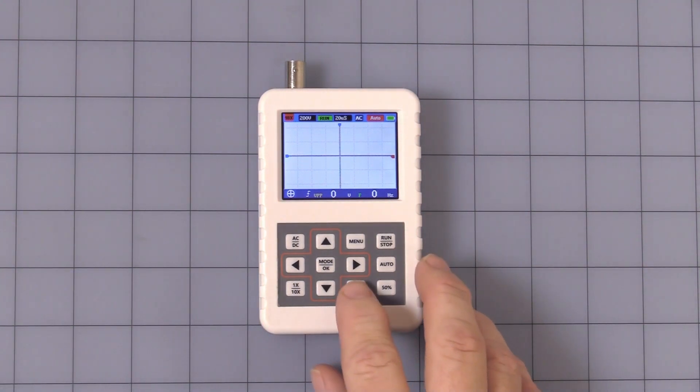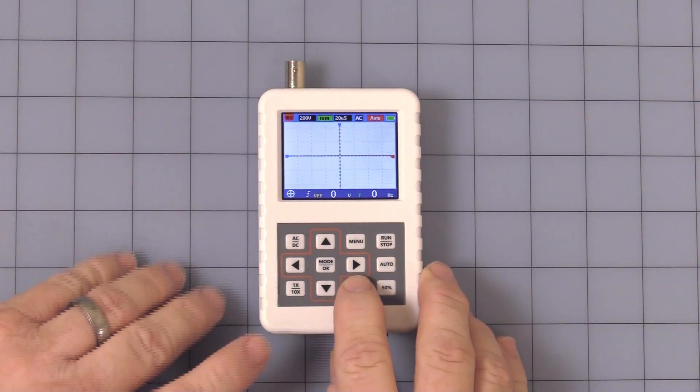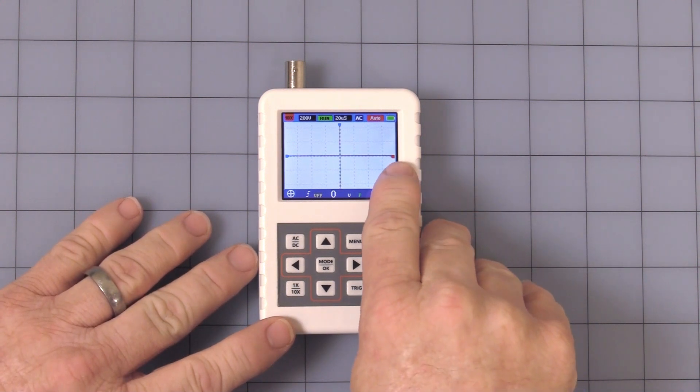Next is, you have your standard trigger mode. You got single, normal, auto. That's your little trigger set point.